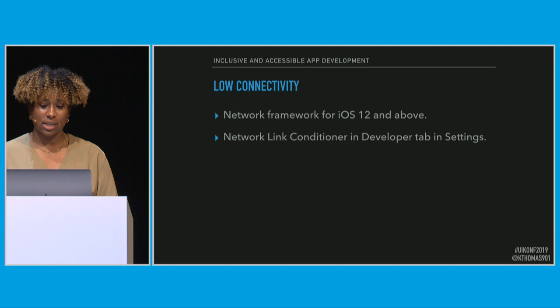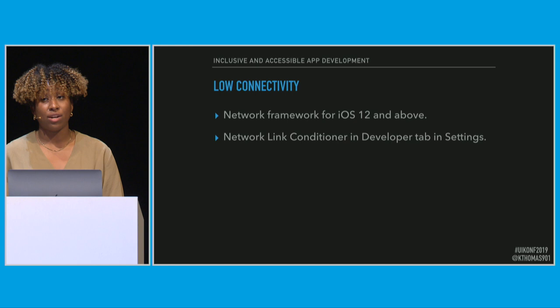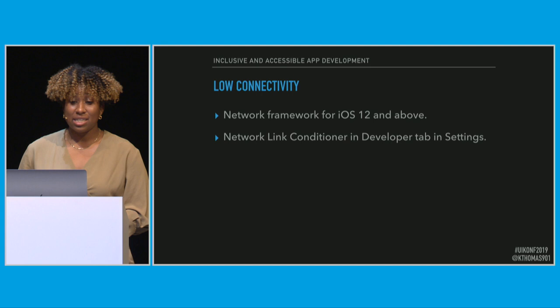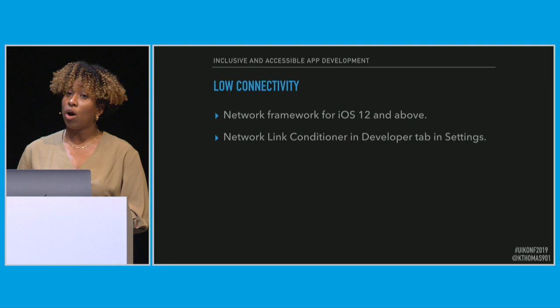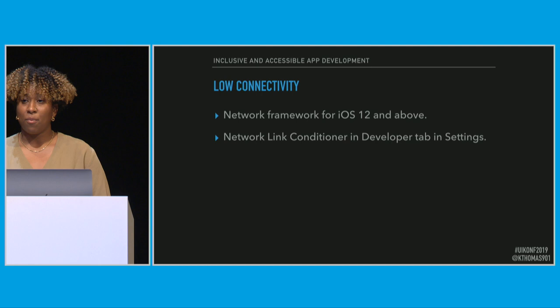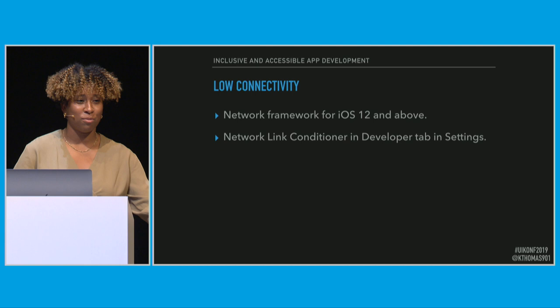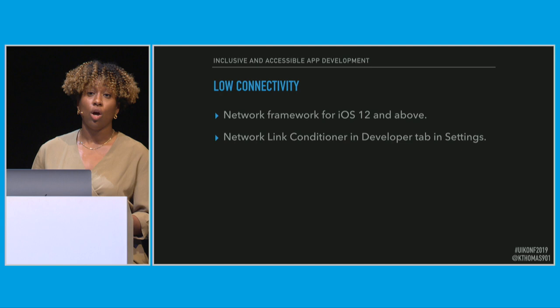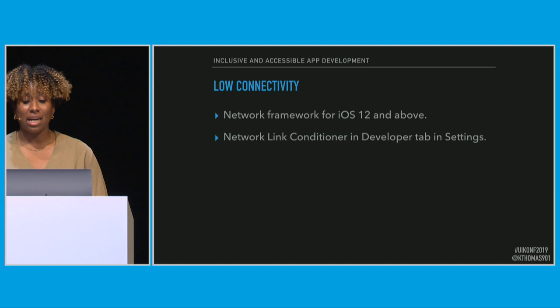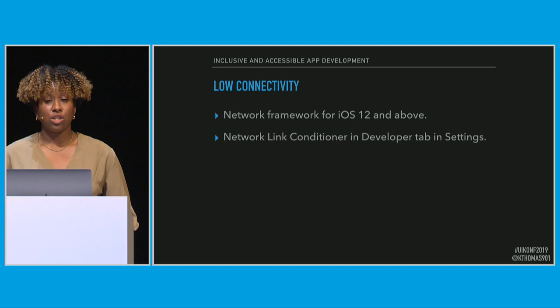Another aspect of accessibility I want to mention is connectivity. Depending on where folks live, they might have different access to internet and different internet speeds. You can test this in code — if you have features that heavily rely on networking, Apple's Network framework, released last year, is a great alternative to the Reachability third-party library. The Network Link Conditioner in the developer tab in Settings is also a great way to play around on the device to see how your app responds with 100% packet loss or a very bad network connection.